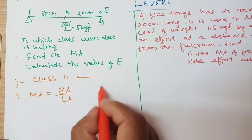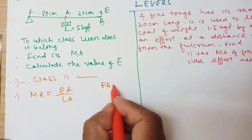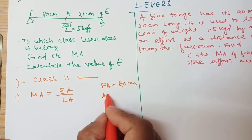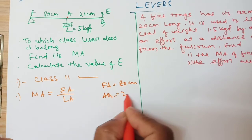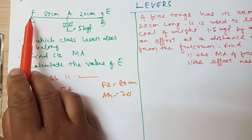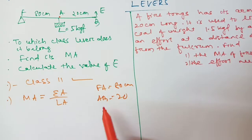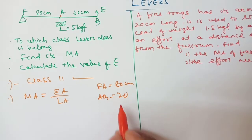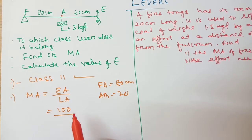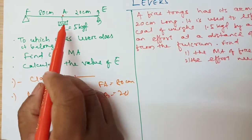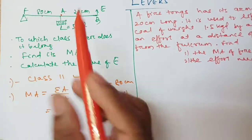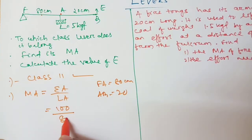FA is given as 80 cm and AB is given as 20 cm. The effort arm is the distance between fulcrum and effort, so it becomes 80 plus 20 = 100 cm. Divided by the load arm — the distance between fulcrum and load — which is 80 cm. So MA = 100 by 80.